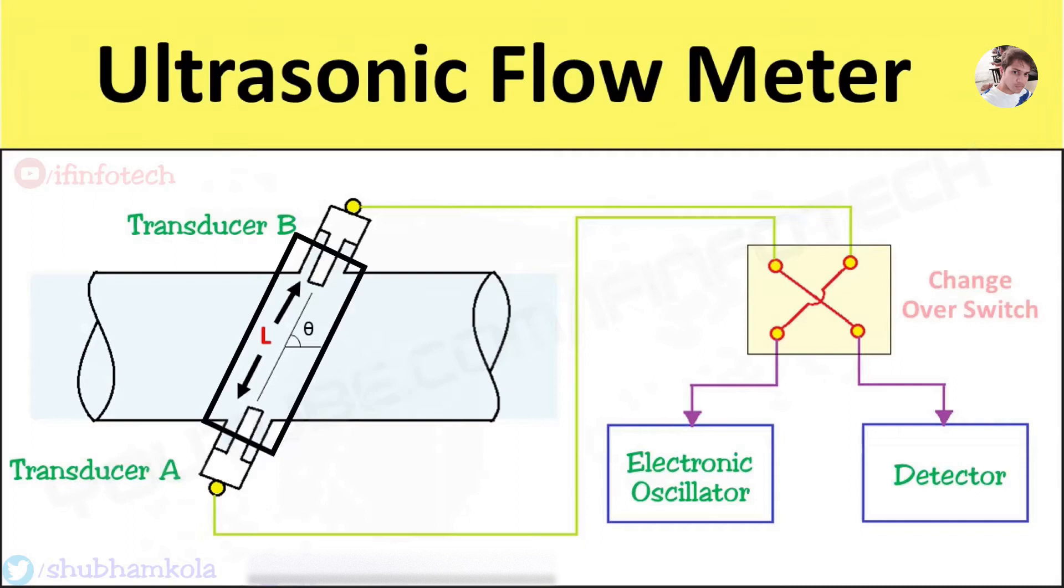Here it consists of two transducers A and B inserted in a pipeline, working as transmitter and receiver. The ultrasonic waves are transmitted from transducer A to transducer B and vice versa. An electronic oscillator is connected to supply ultrasonic waves alternatively to A and B, which work as transmitters through a changeover switch. The detector is used to measure transit time from upstream to downstream transducer and vice versa.